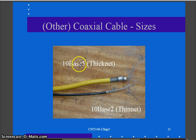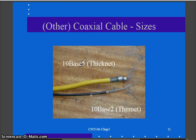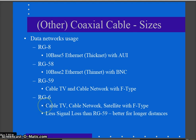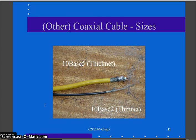Here's your 10Base-5 thicknet, and then the 10Base-2 thinnet. This was the original Ethernet, and this was the updated Ethernet when we were still using the coax bus. Moving closer to today, cable television used RG59 with an F-type connector for a long time, but most modern cable TV and satellite connections to your house are going to be RG6, which has better signal carrying capability and less signal loss than RG59.